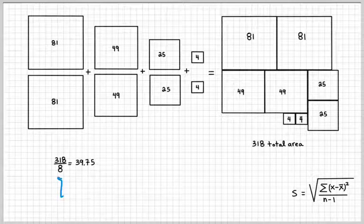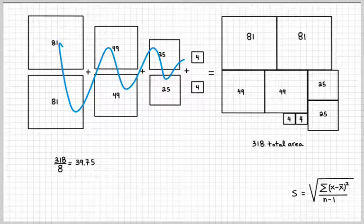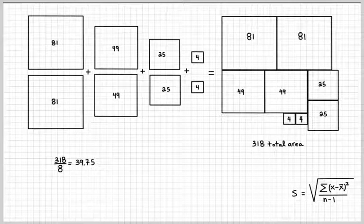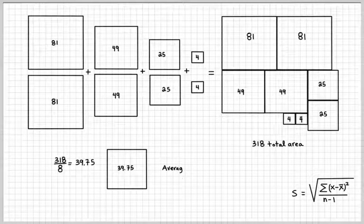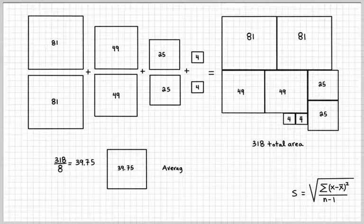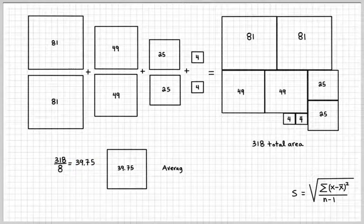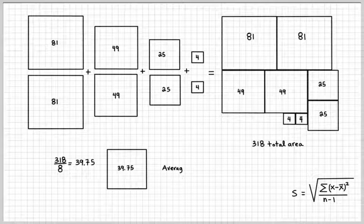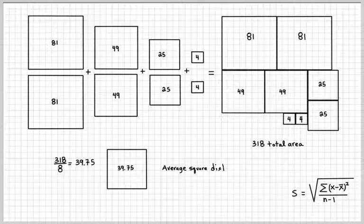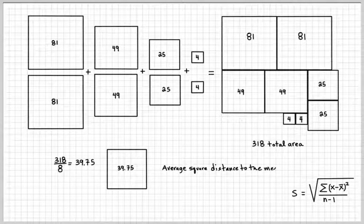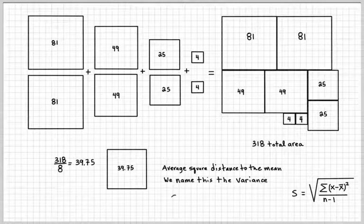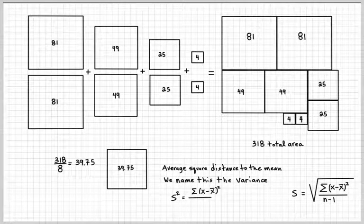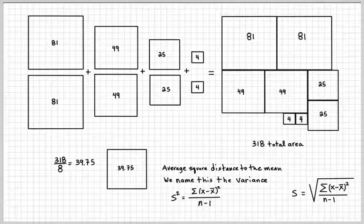And you can see that there are 8 boxes, so that kind of makes sense. And then when you divide, 318 divided by 8, it gives you 39.75, which is the average square distance to the mean. And so we name this average square, we can name it as the variance.